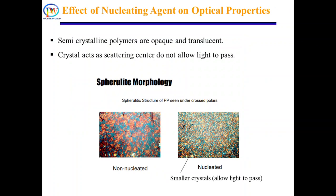Nucleating agents are also used to enhance optical transparency, especially in semi-crystalline polymers. Since semi-crystalline polymers are opaque or translucent — crystals act as scattering centers and reflect or scatter light — they do not allow light to pass. For example, in pure polypropylene the crystals are so large that the final products are opaque. Therefore, nucleating agents are added to allow the polymer to form smaller crystals, since smaller crystals allow light to pass, increasing the optical clarity or transparency. Nucleating agents are also known as clarifying agents when deliberately added to increase transparency.